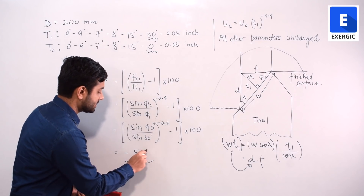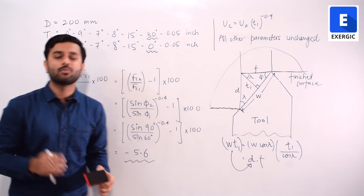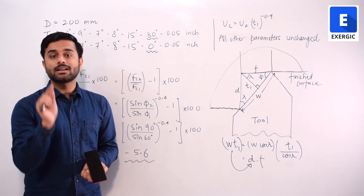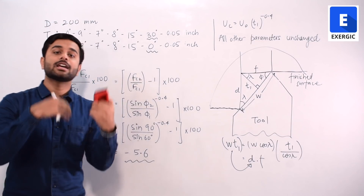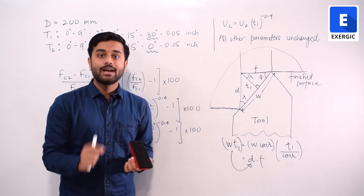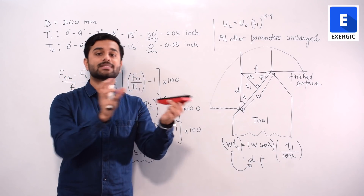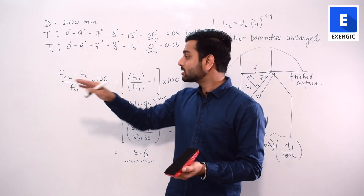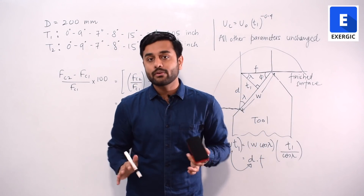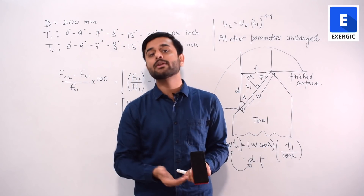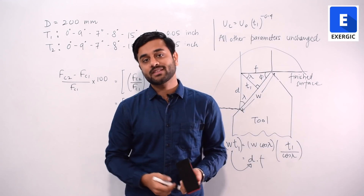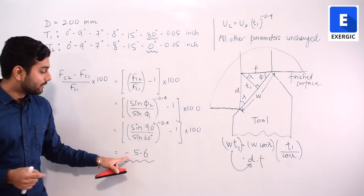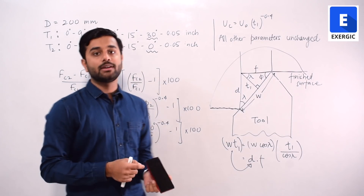The answer rounded to one decimal place is −5.6. Some students made the mistake of writing 5.6 instead of −5.6. The question asks for the value of percentage change — not the magnitude — and value can be positive or negative. Also note the 200 mm diameter given in the question has no use in the solution; the question is over-informative. The correct answer is −5.6.